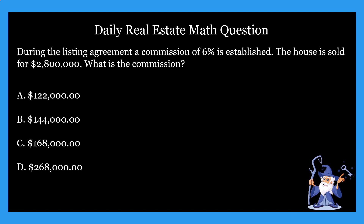So today we're talking about commission. We're sticking with the theme this week — we're going over real estate commission. So let's take a look at this question. During the listing agreement, a commission of 6% is established. The house sold for $2.8 million. What is the commission?